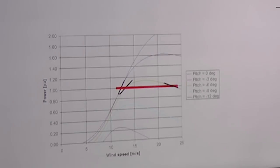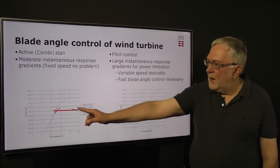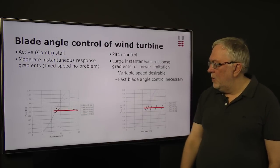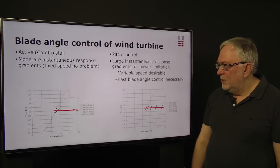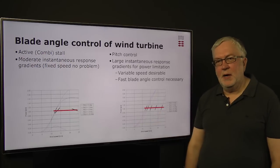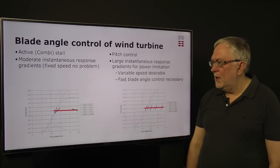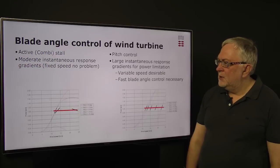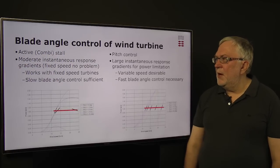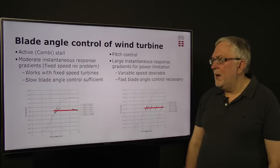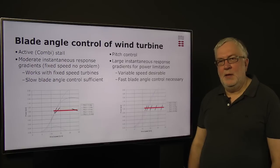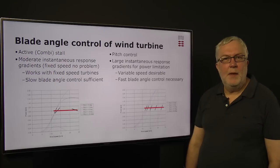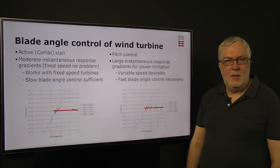And what we see here is when we are limiting the power to the nominal value at high wind speeds, the slope is not at all as high as over here. And this means that the torques that we will see when the wind speed is fluctuating—the torque changes—are much smaller in this case. So that is why this concept can work with fixed speed wind turbines and also with relatively slow blade angle control, meaning that the blade angle actuators and the whole pitching system can be much cheaper. So this has been applied in fixed speed wind turbines.